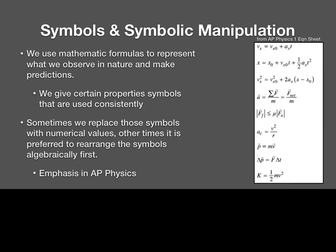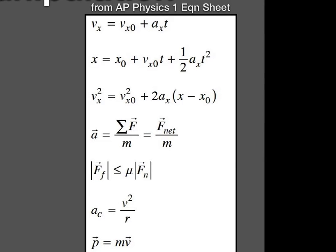Next we have symbols and symbolic manipulation. Looking at the formula sheet from the beginning of the year, there's a complicated mix of squares, subscripts, superscripts, arrows, Greek letters, and math symbols. This is one of the biggest adaptations in physics — using this notation day in, day out. It looks complicated right now, but we'll take it step by step and it will get better as we go.